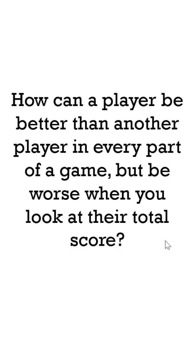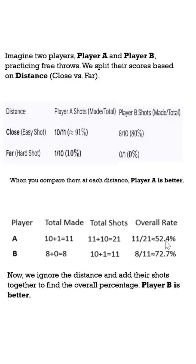Simpson's Paradox: how can a player be better than another player in every part of a game, but worse when you look at their total scores? Let us understand this. Imagine two players, Player A and Player B, practicing free throws. We split this by distance: close distance and far distance. If you see this table, understand the following.